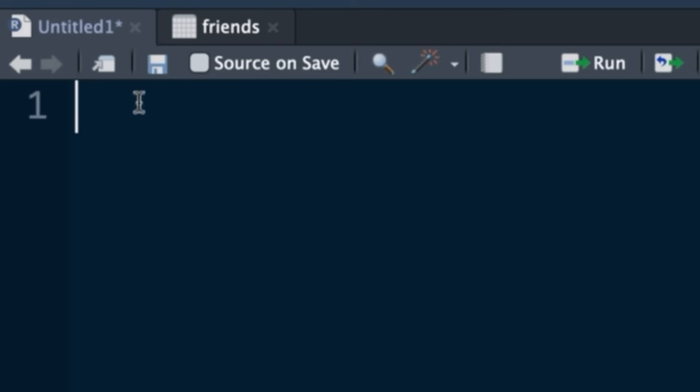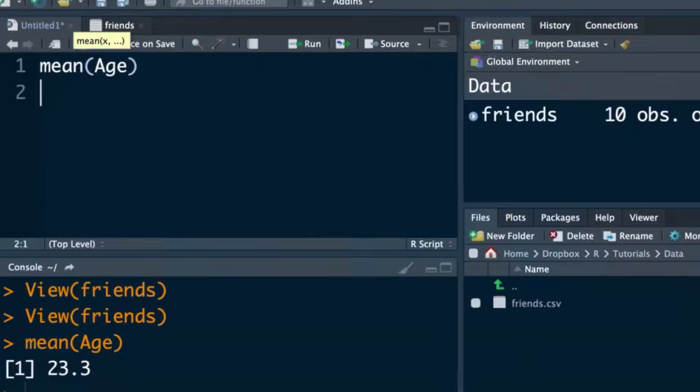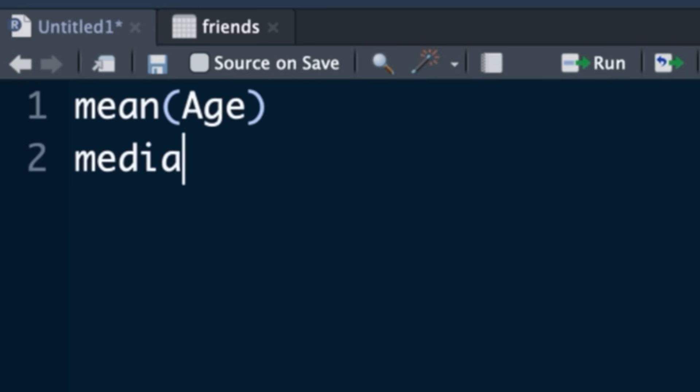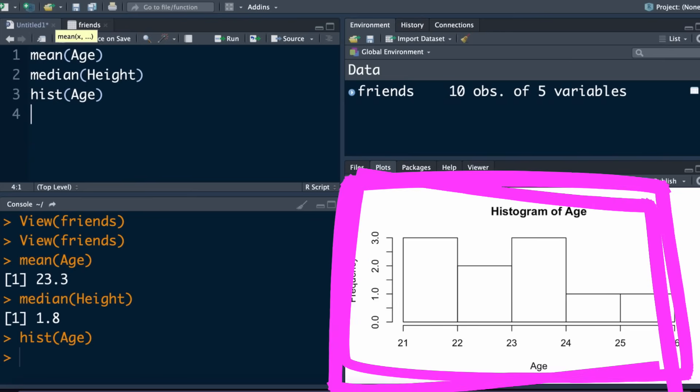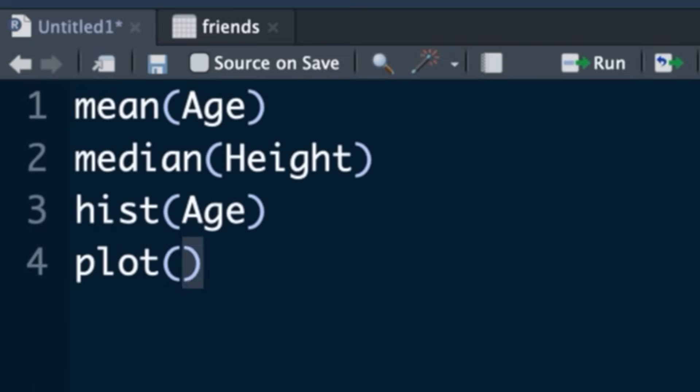Basically, the way the coding works is you apply a function to an object. So, in this case, the function might be the mean. We want to know the mean of age, which is the object, which is 23. We might want to know the median of the height. We can plot a histogram of the age or plot age against height.